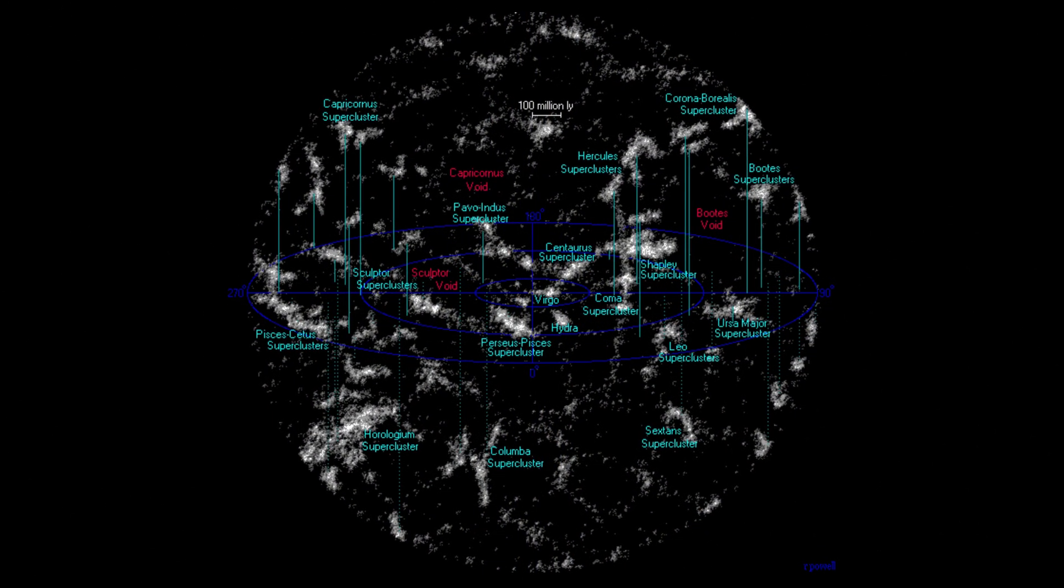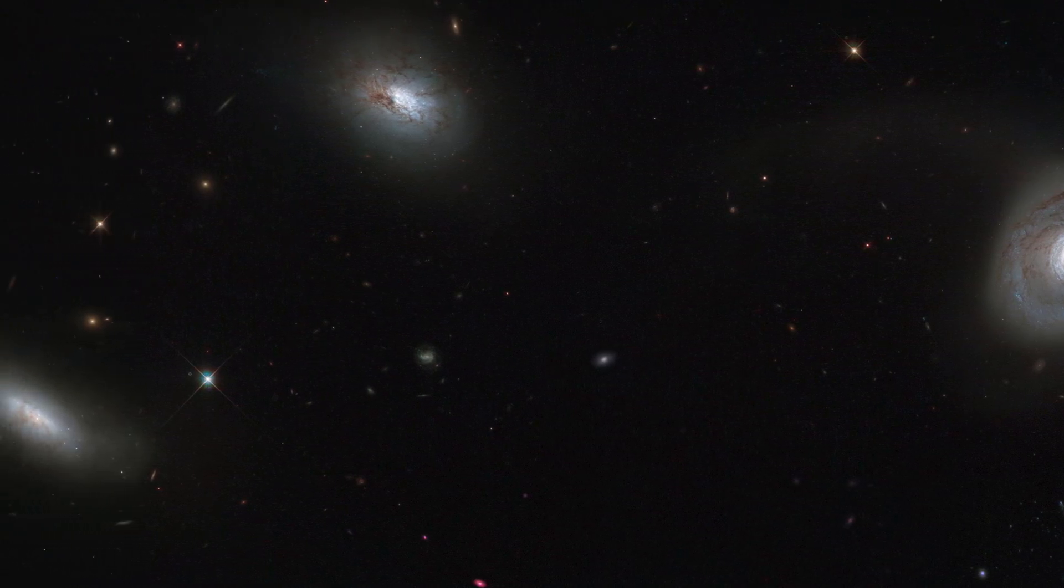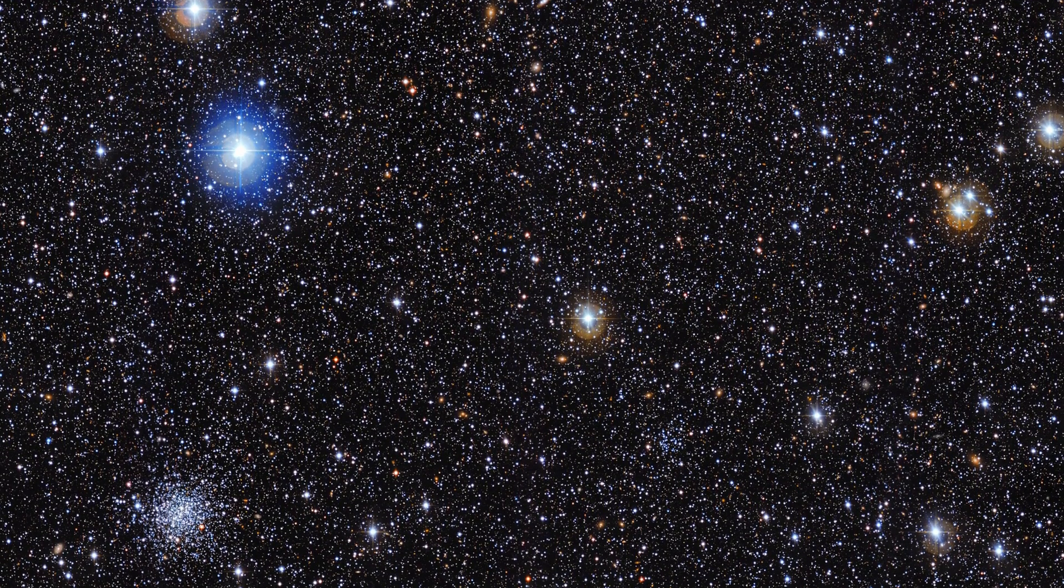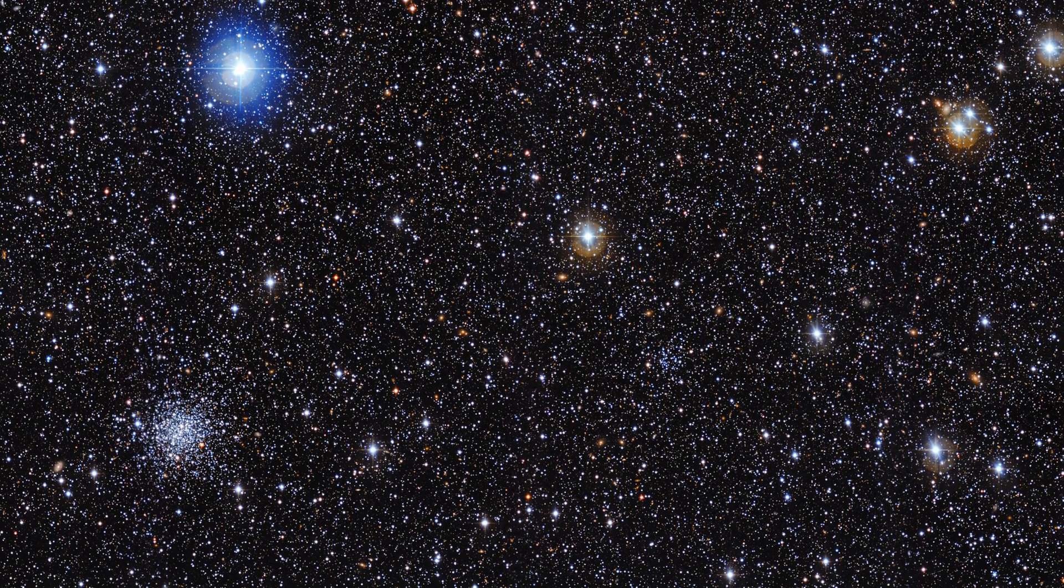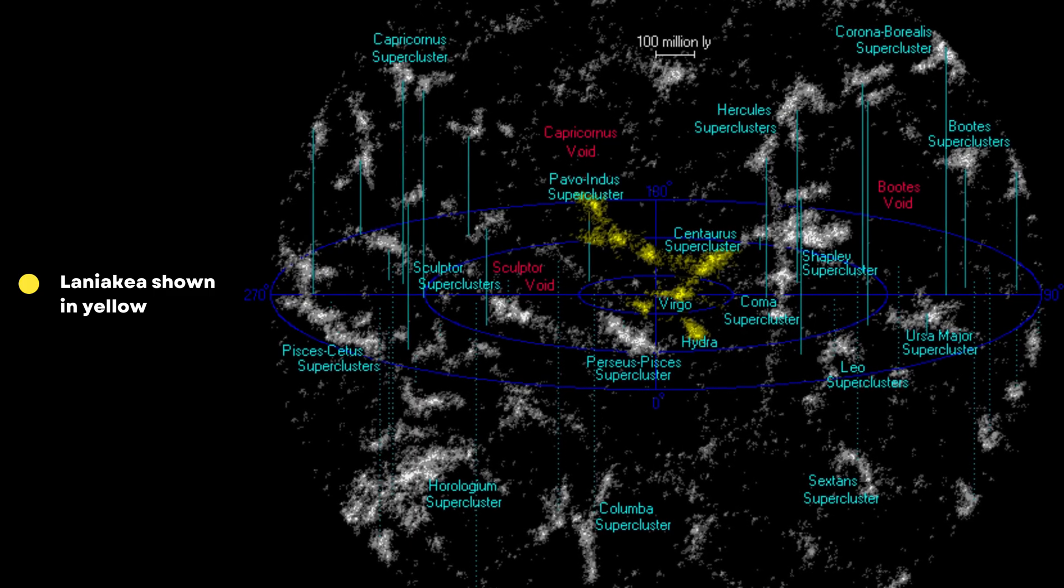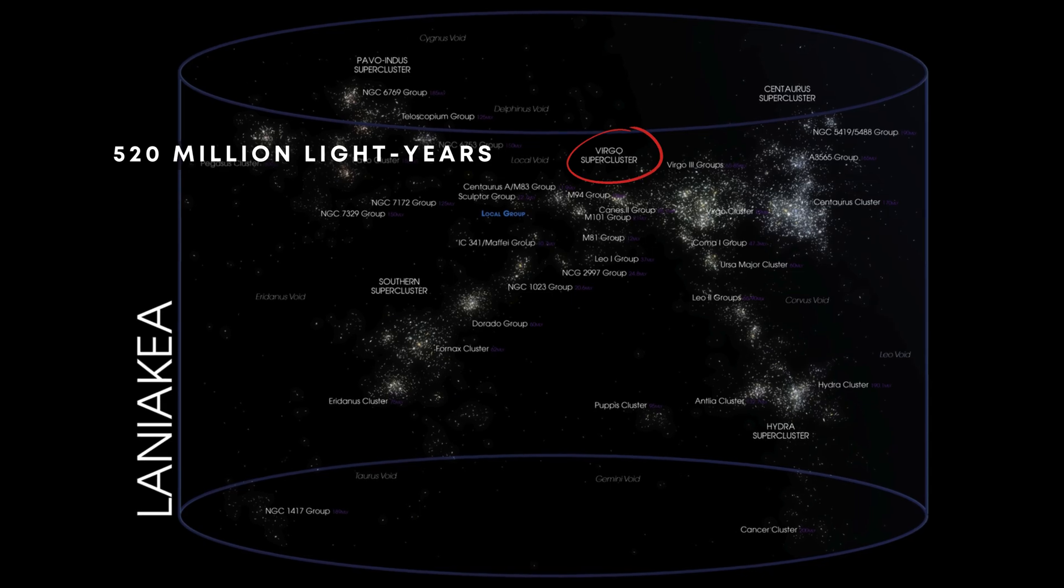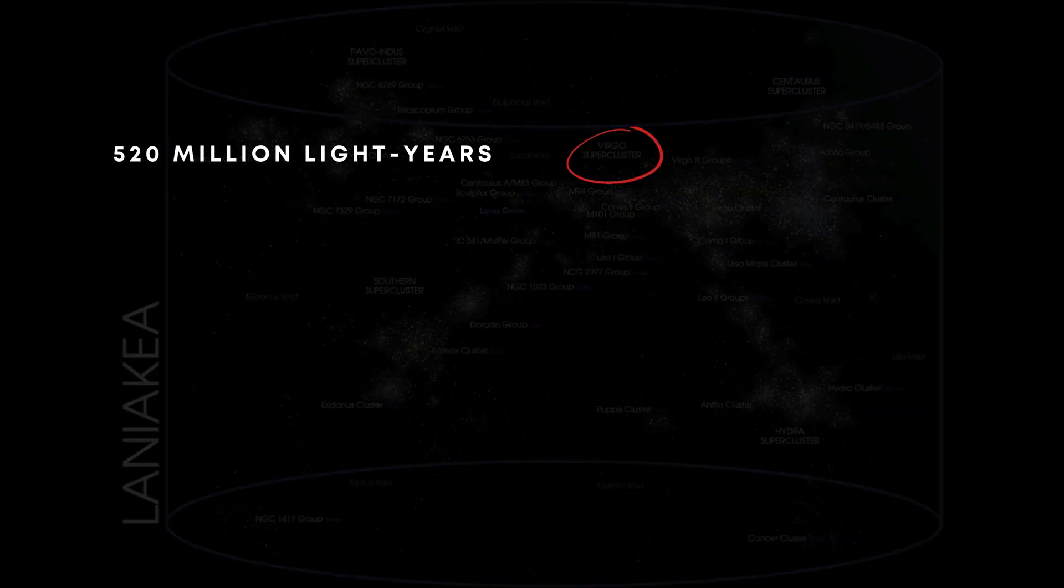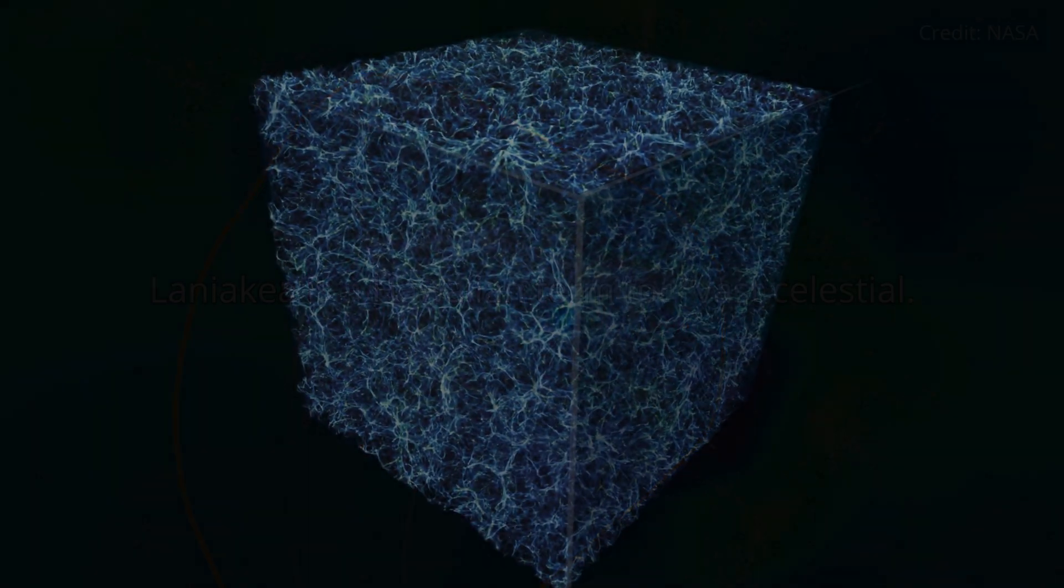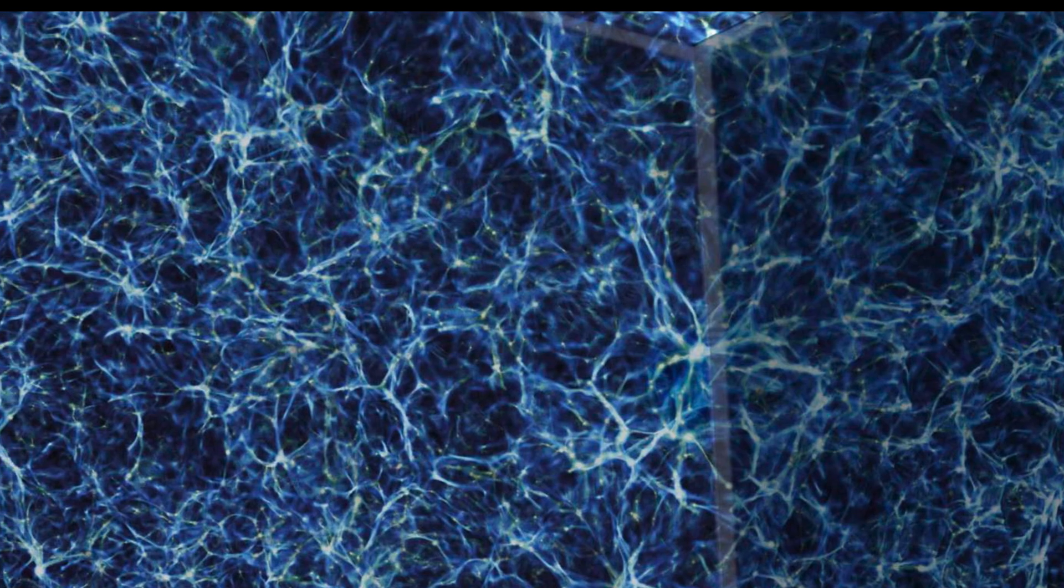Superclusters are the largest known structures in the universe, comprising numerous galaxy clusters and groups. They span hundreds of millions of light years and form a vast, web-like network across the cosmos. The Laniakea supercluster is our home supercluster. It includes the Virgo supercluster, which is about 520 million light years across. Laniakea is a Hawaiian term for vast celestial. These superclusters are connected by filaments of dark matter and gas, creating a cosmic web.